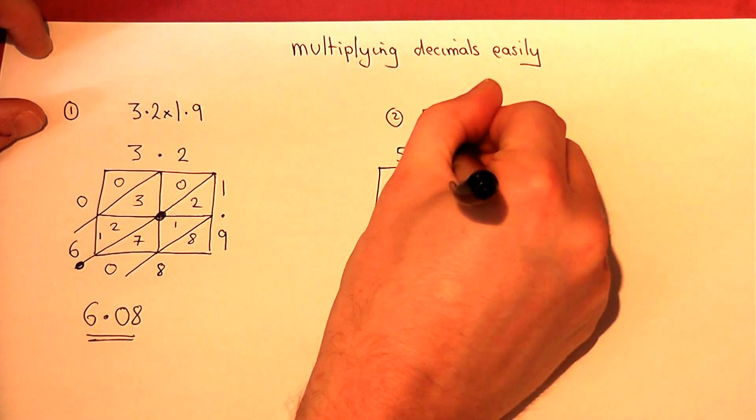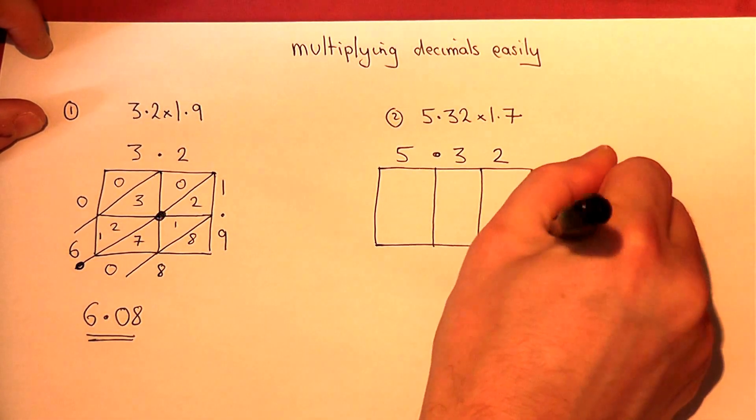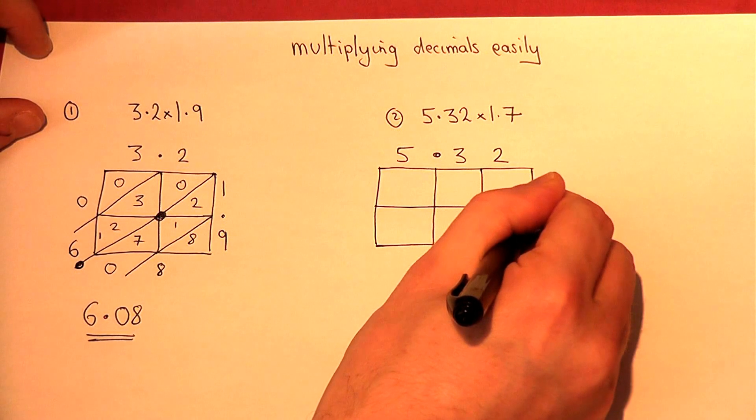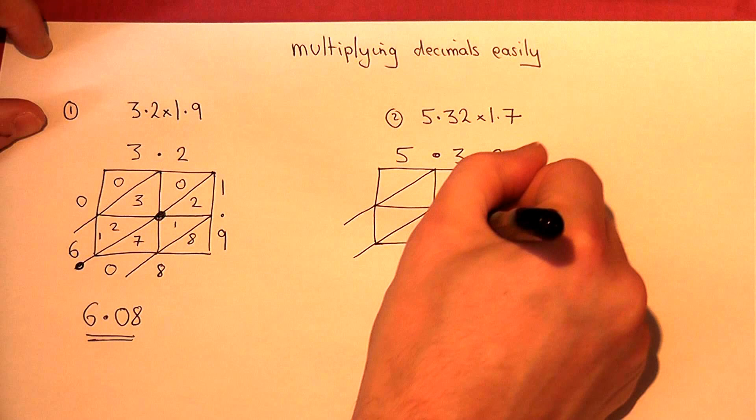5.32 and 1.7. I extend these lines down through the diagonals.